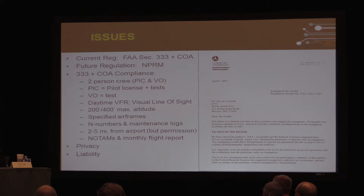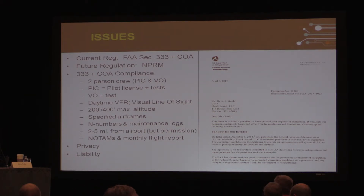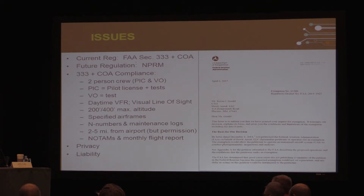Flights have to be conducted during the daytime. It has to be VFR — visual flight rules — meaning there's good visibility. You have to maintain visual line of sight, so you cannot fly beyond the ability of the pilot to see the drone with an unaided eye. There's a 400-foot maximum altitude, and our co-op actually sets it at 200, so we have to get a special co-op to go above 400. It's only certain airframes — for us it's a Phantom series drone and two Altavian models — and they have to have N-numbers, so these are registered with the FAA. You also have to keep maintenance logs and stay a certain distance away from airports.